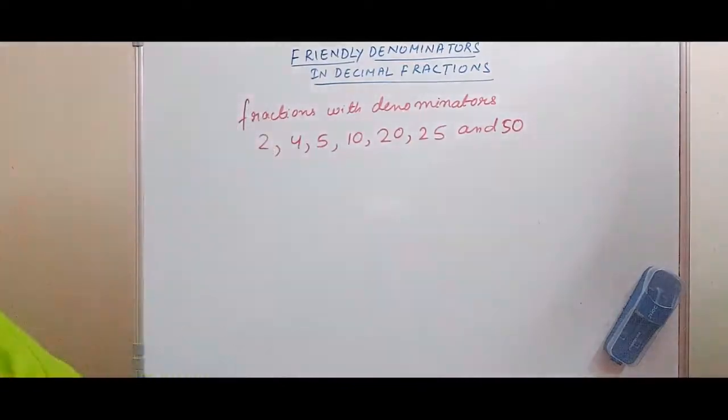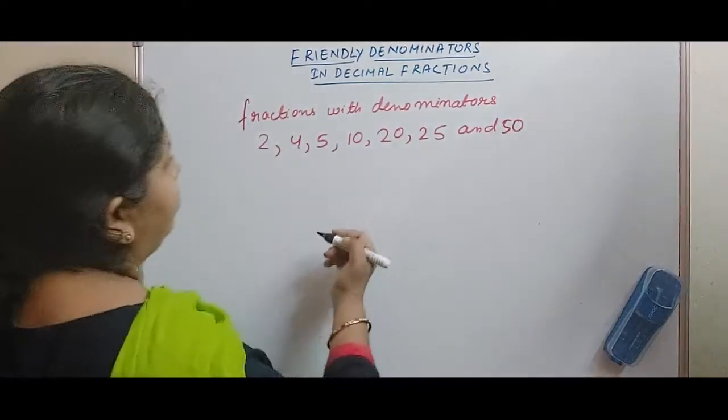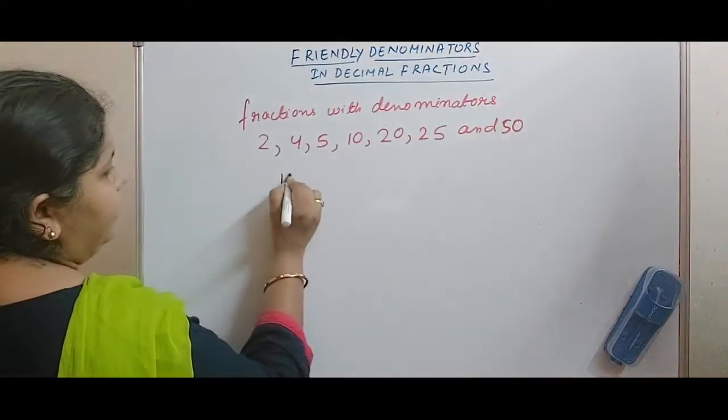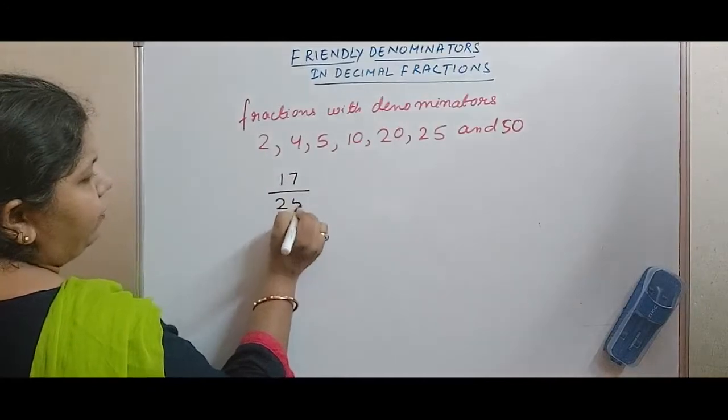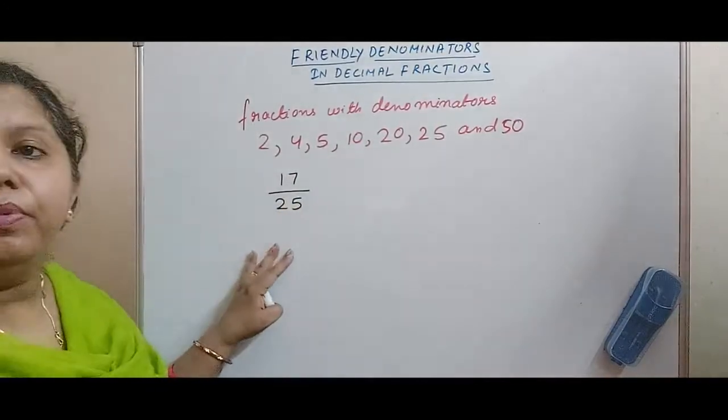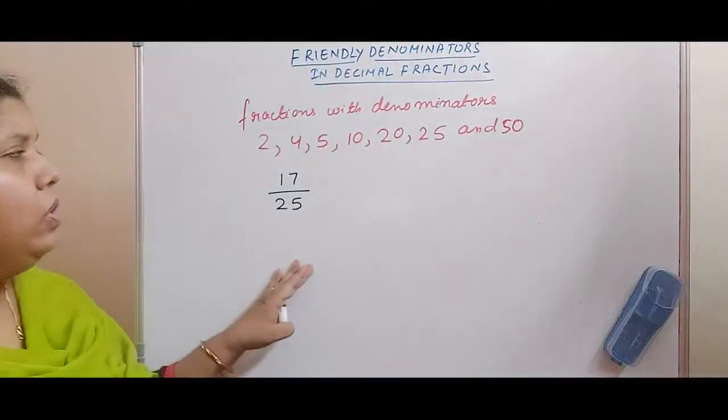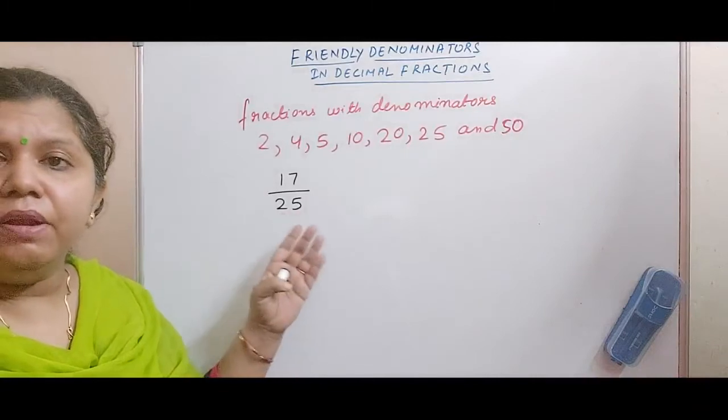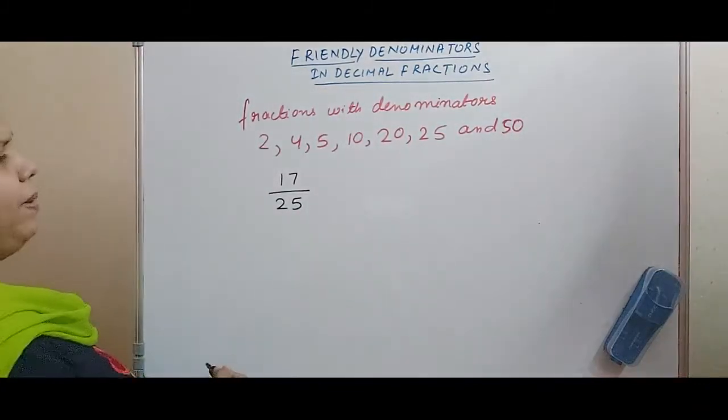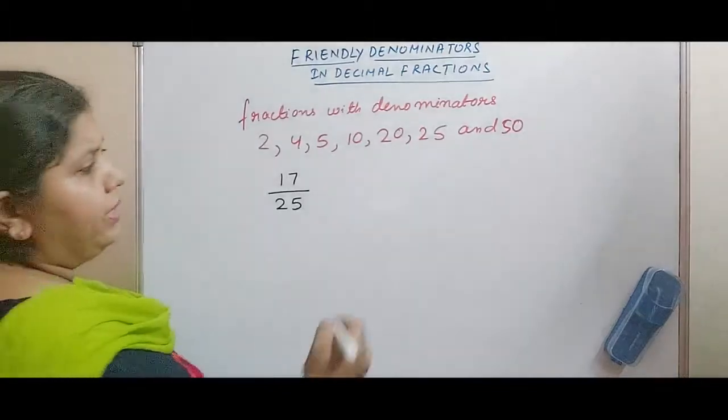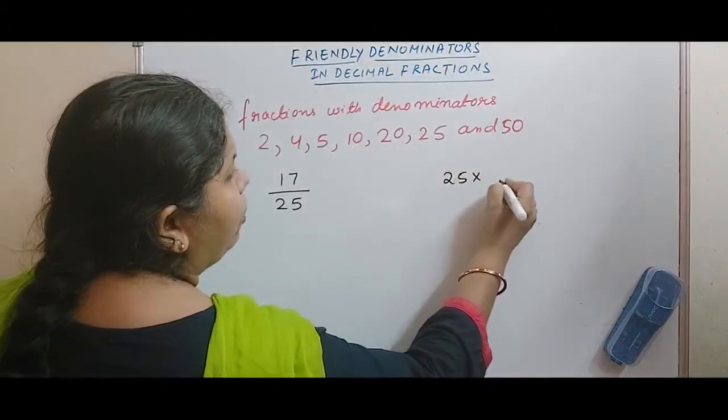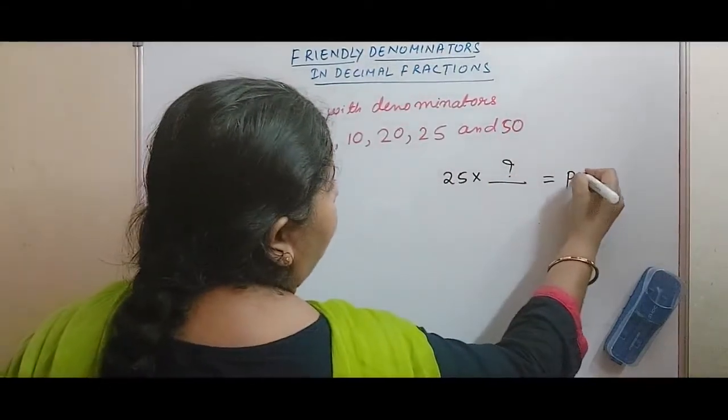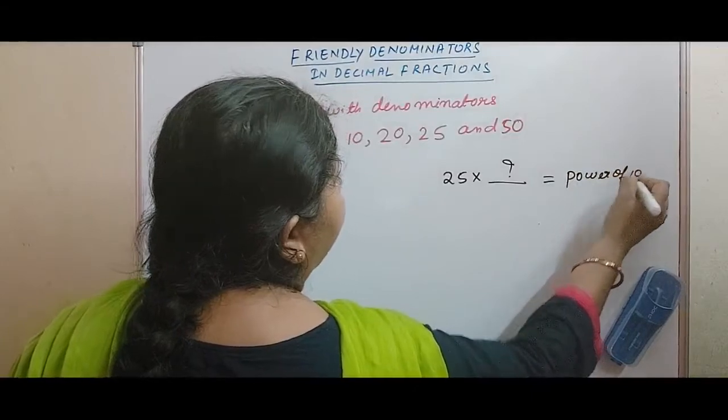For example, let me try to think of a denominator that is 25. Let it be 17 by 25. So this is a proper fraction, 17 by 25. So I need to convert it into a decimal fraction. So what I have to multiply with 25, that means I will say 25 into what will give me a power of 10.